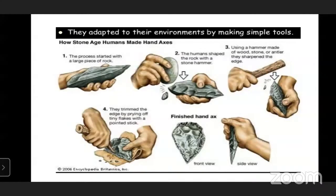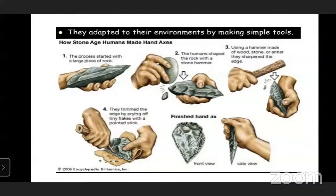How stone tools are made: the process started with a large piece of rock. Second, the human shaped the rock with a stone hammer - a round-shaped stone whose edges are continuously hit. Third, using a hammer made of wood, stone, or antler, they sharpened the edges. Fourth, they trimmed the edge by prying off tiny flakes with a pointed stick. The finished hand axe - front view and side view - can be seen in the picture.